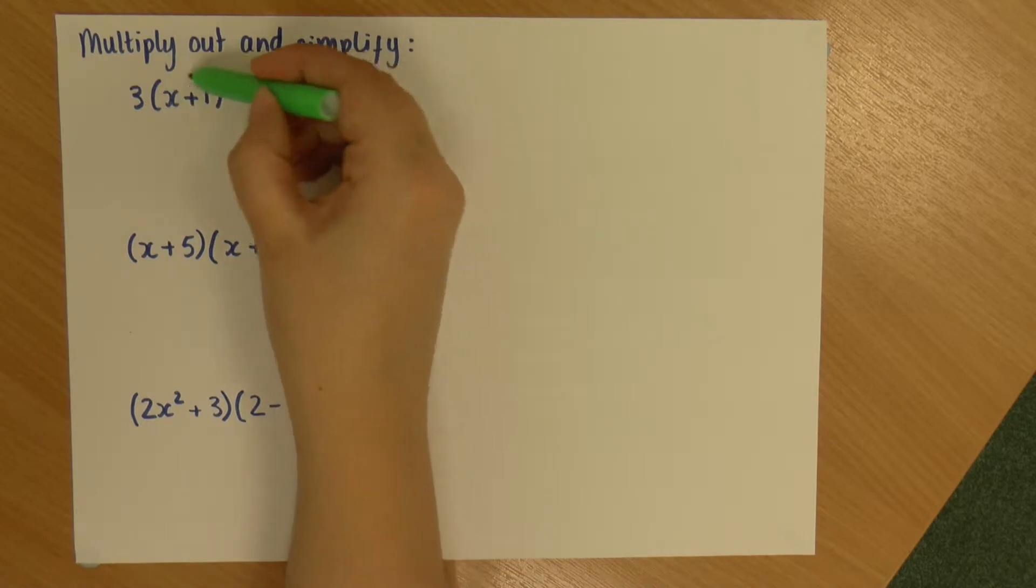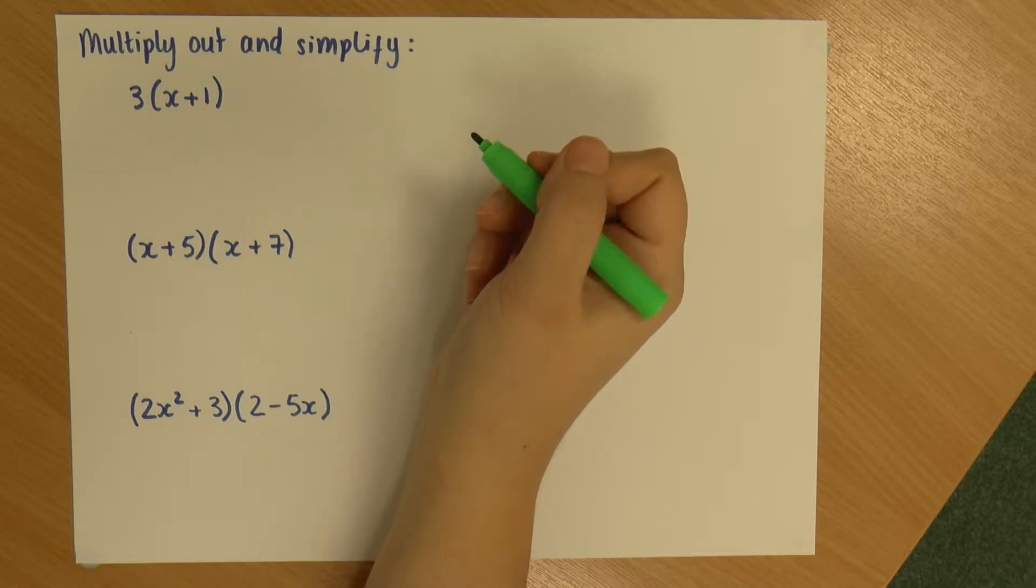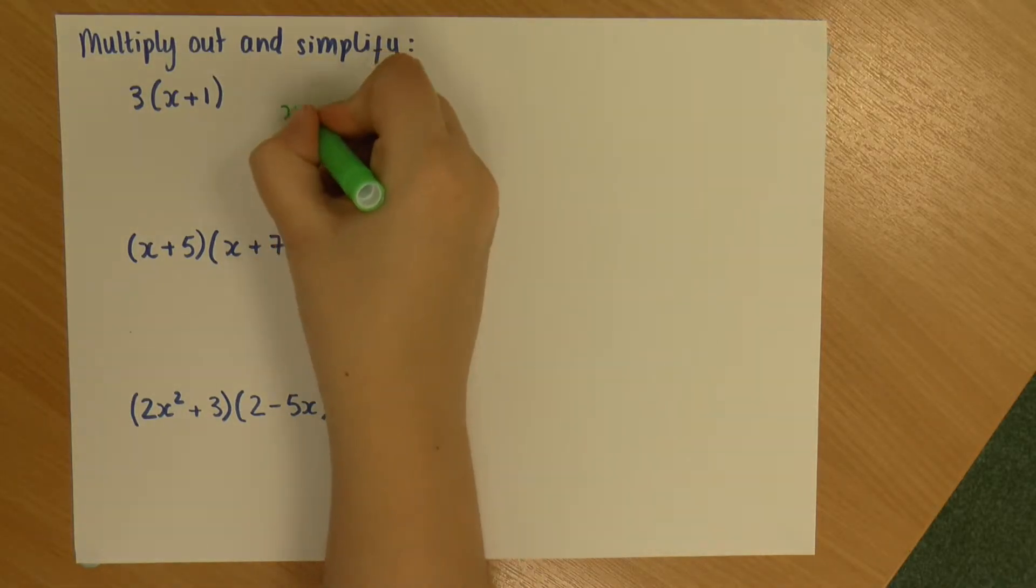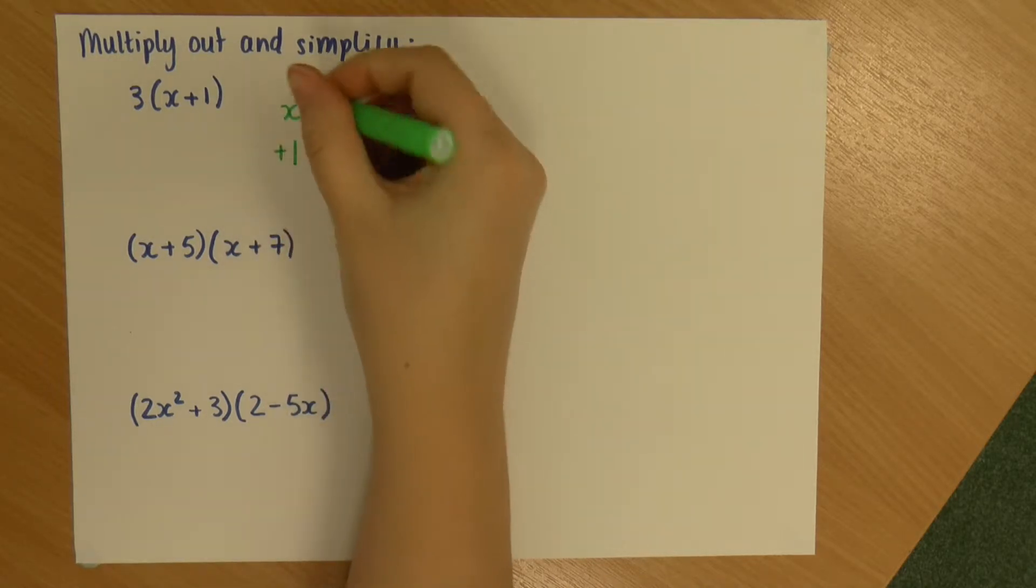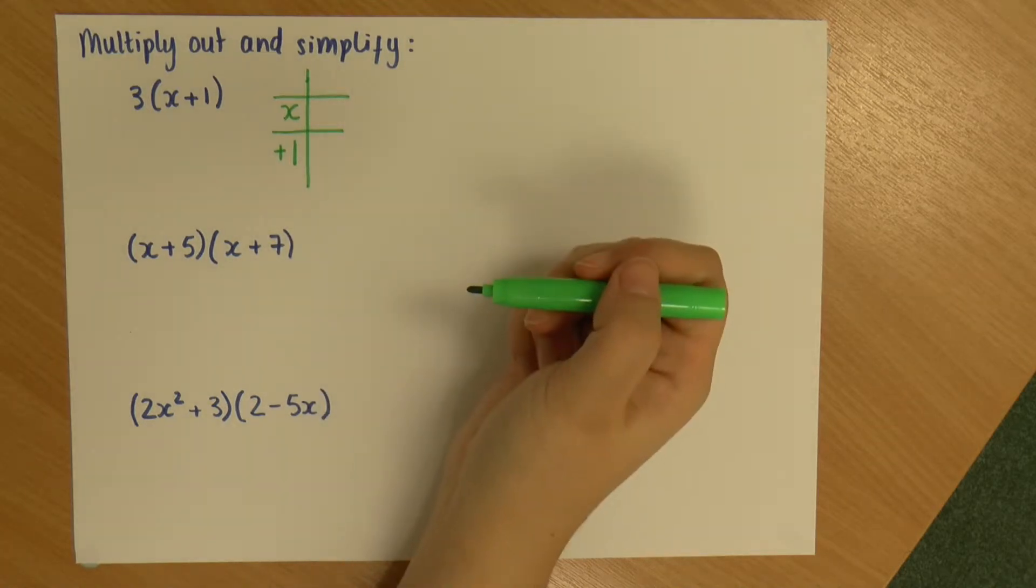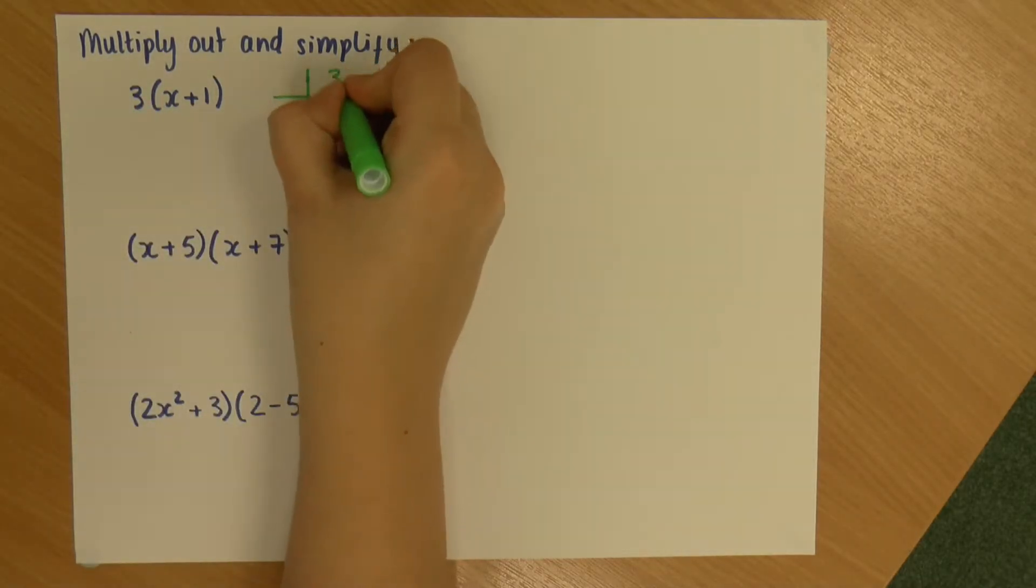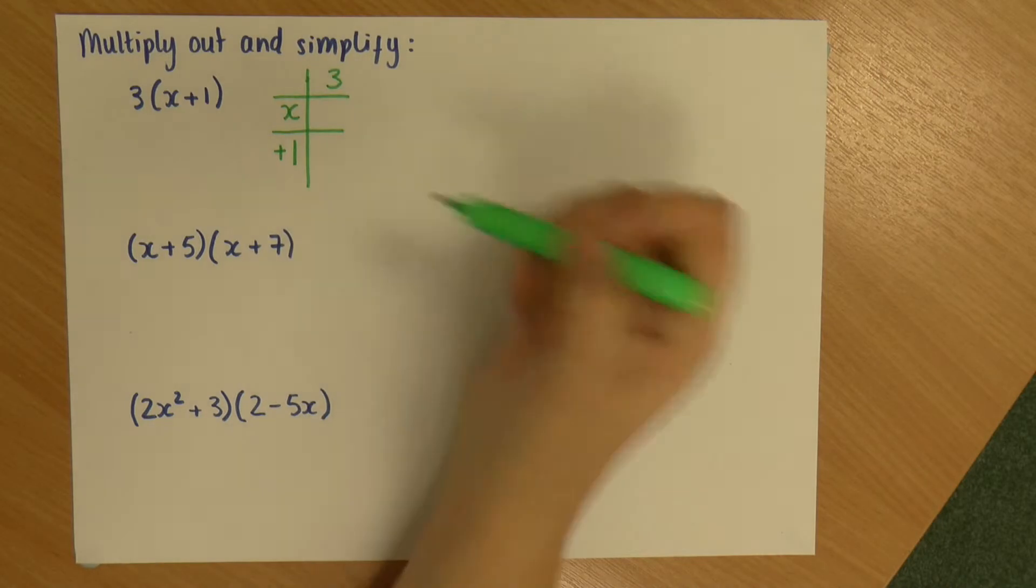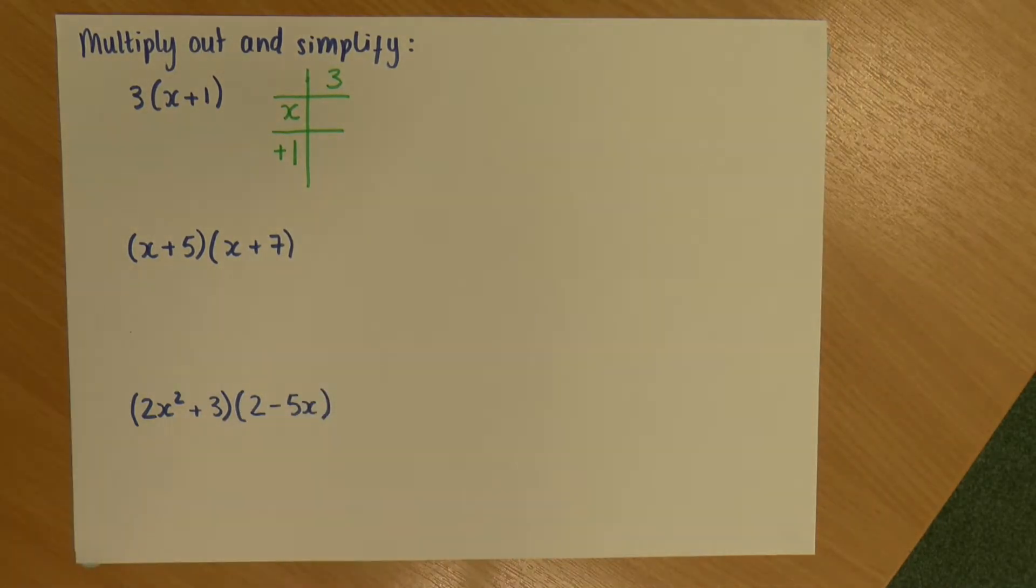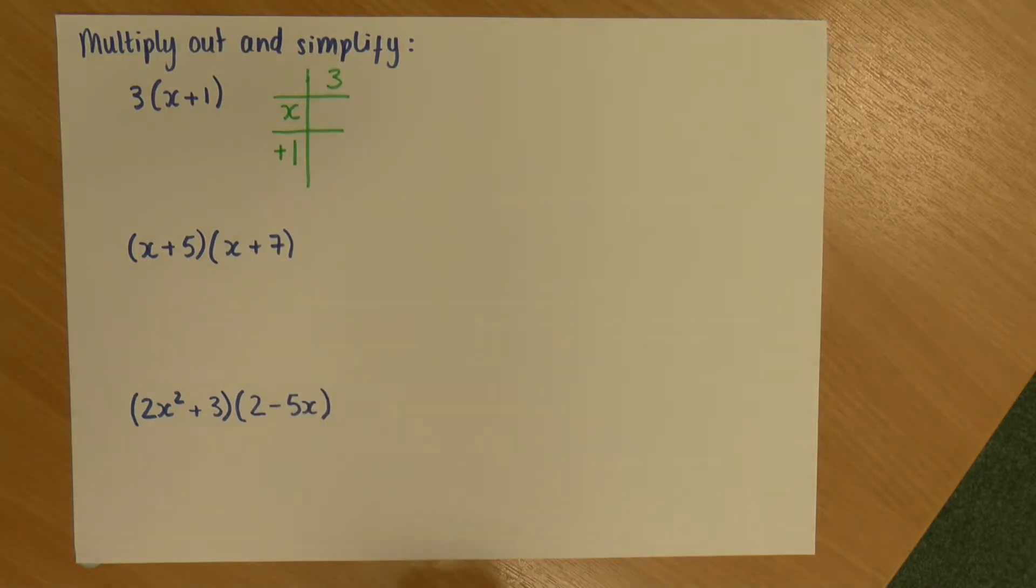So, I take what's in my brackets and I split it into the terms with letters and the terms with numbers by themselves. So, I'm going to have my x and my plus 1. And I'm going to construct a little table. So, I've got my x and my plus 1 down the side. And along the top goes what's outside the bracket. So, my 3.